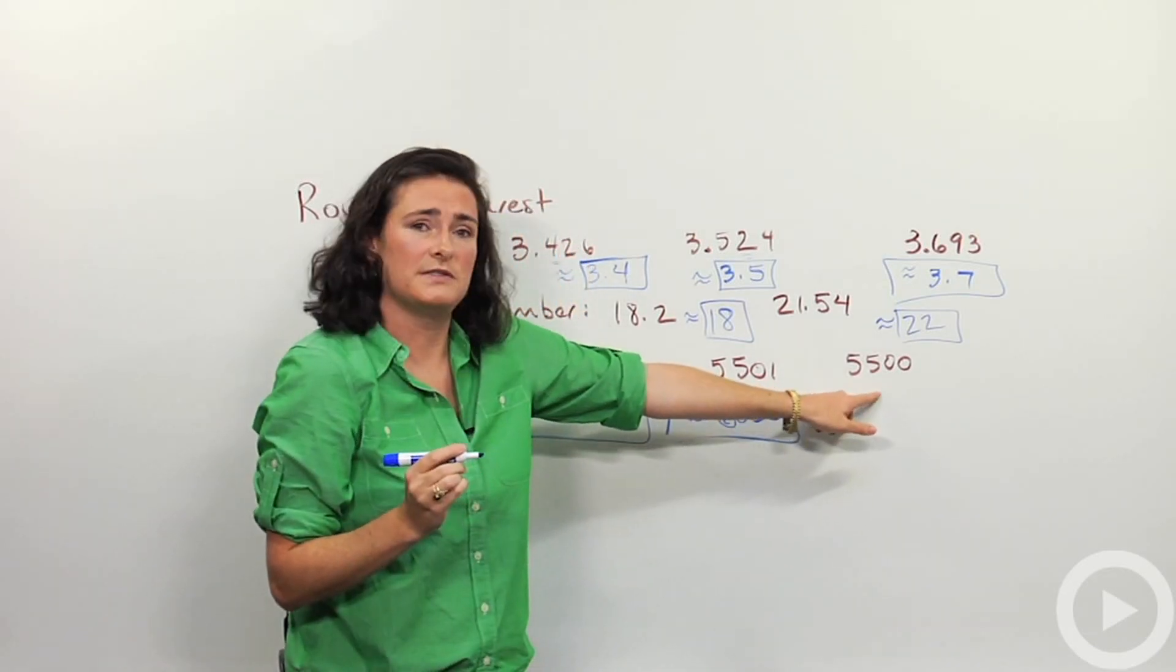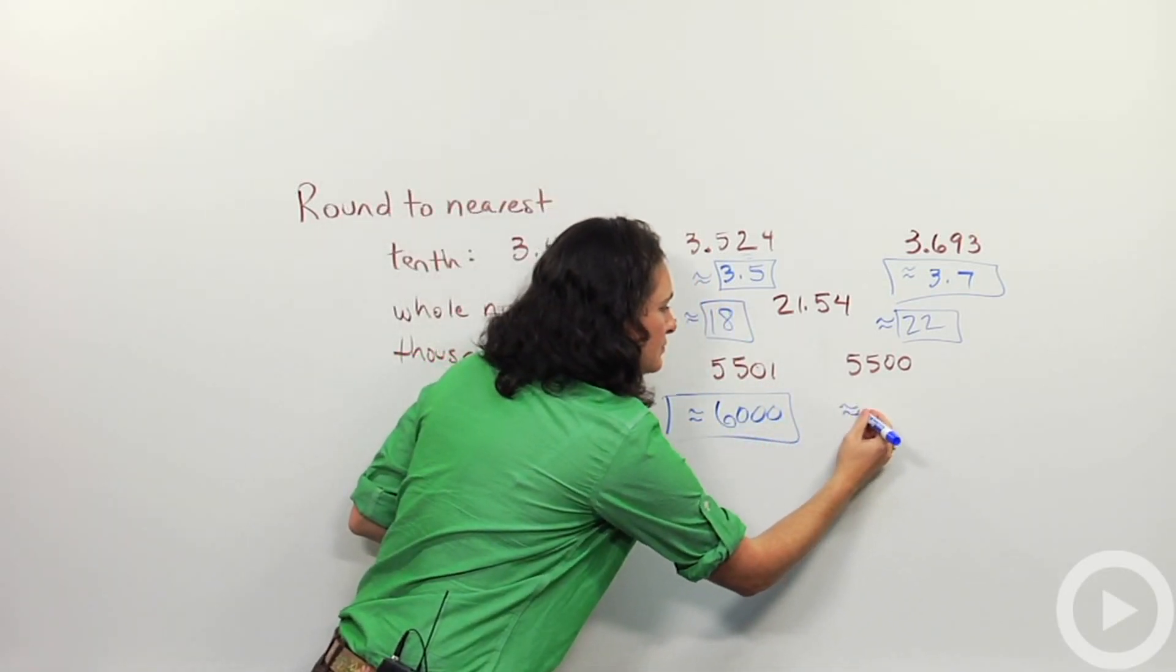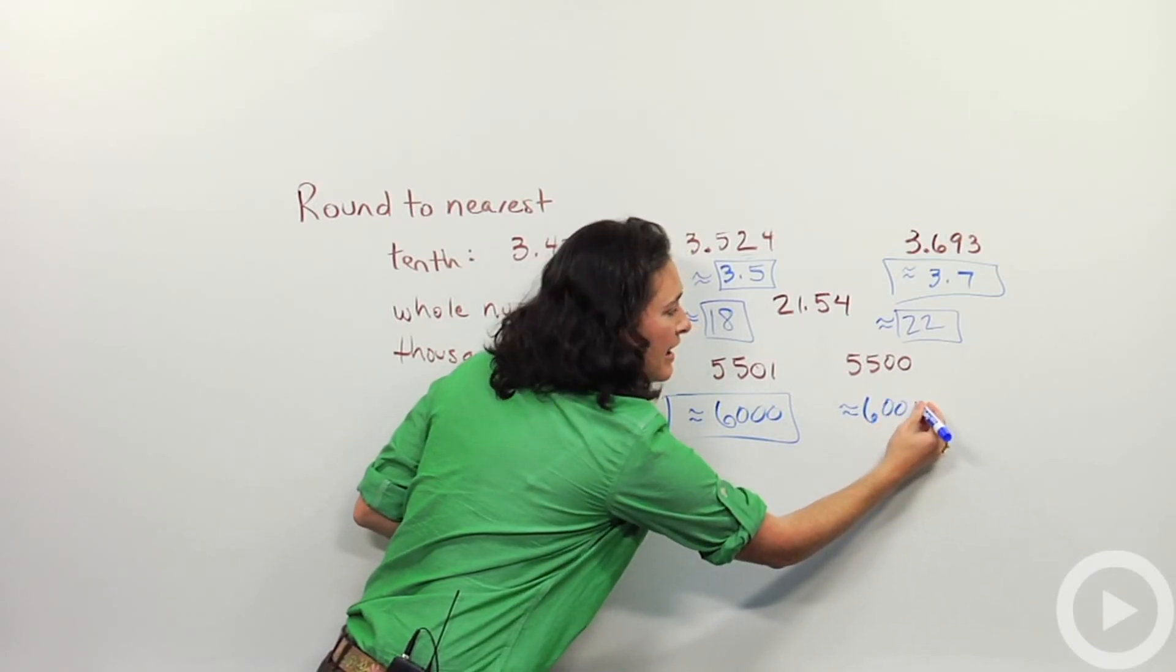And this one also, five thousand five hundred. I'm going to round that up to six thousand because of that five in the hundreds place.